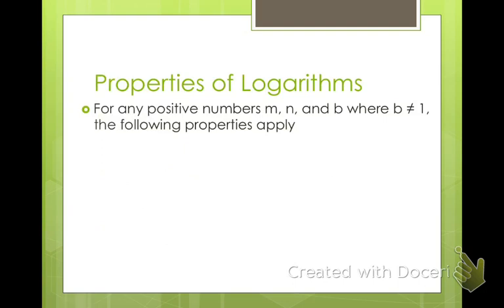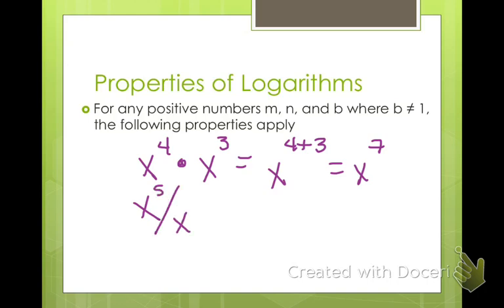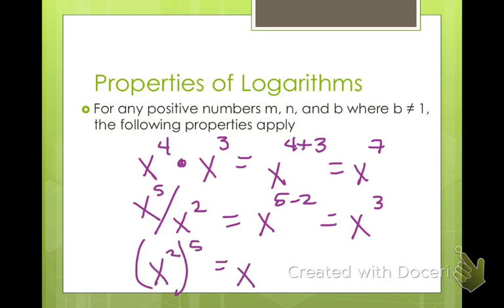So for properties of logarithms, do you remember what properties of exponents are? If we have x to the 4th times x cubed, what do we do with our x's? x to the 4 plus 3, so that's x to the 7th. What if we have x to the 5th divided by x squared? We subtract our exponents, x to the 5 minus 2, so that's x cubed. What if we have x squared raised to the 5th power? We multiply our exponents, x to the 2 times 5, which is x to the 10th.